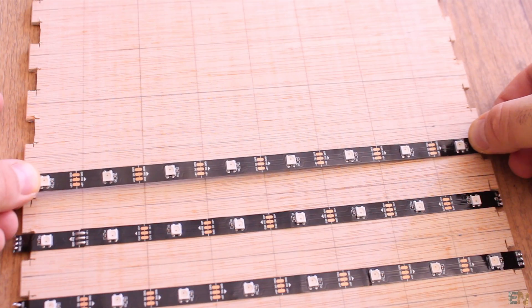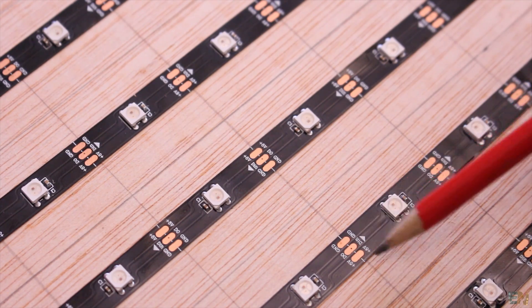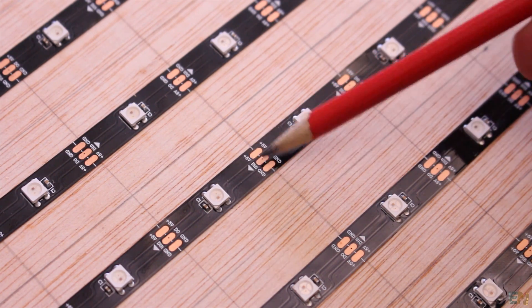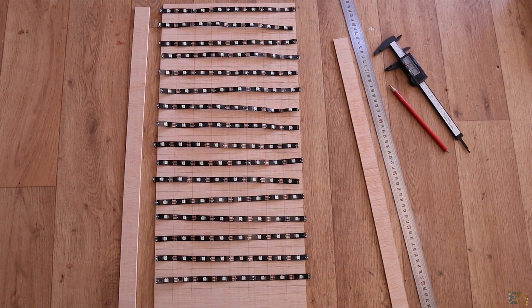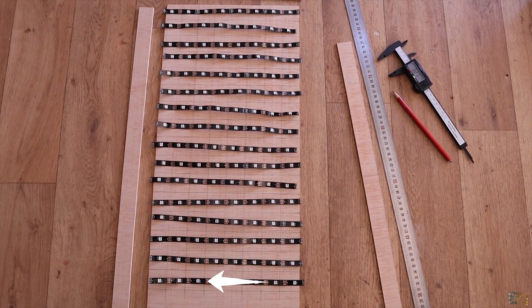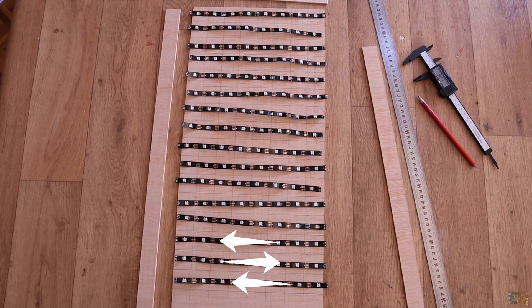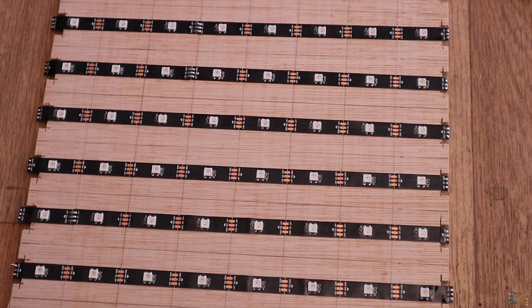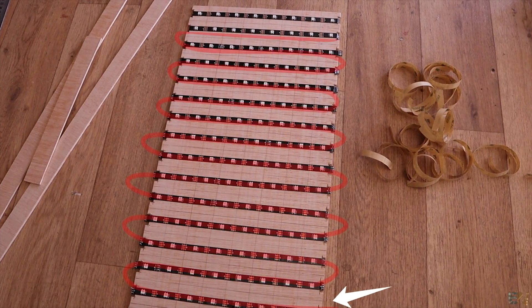So it's time to glue the strips. If you take a look from close, you will see that the strip has a small arrow on it, so this will show the direction of the serial data. Make sure that you place the strip like this. The first line with the arrow to the left, the second to the right, the third to the left and so on. This will be placed in the shape of an S. The first LED will be here and the last one here.